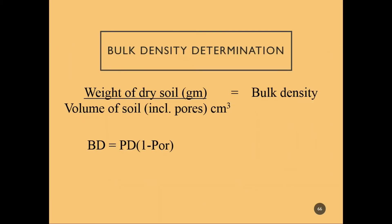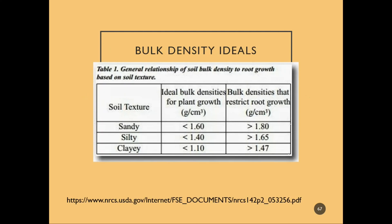For determination of bulk density, some general guidelines relate it to root growth — specifically, limiting bulk density by soil texture. If someone tells you bulk density is too high, your first thought should be: what is the soil texture? An ideal bulk density in a sandy soil could be as high as 1.5 to 1.6 g/cm³, but that same bulk density in a clay soil is root-limiting.